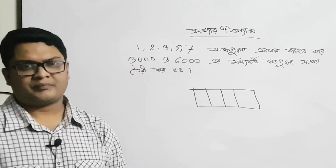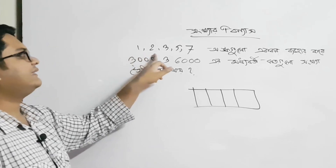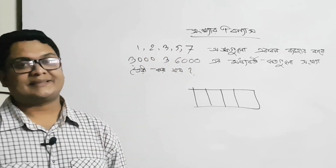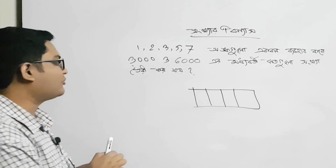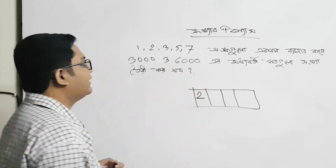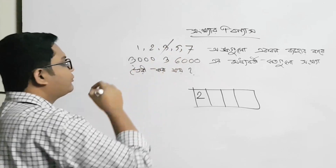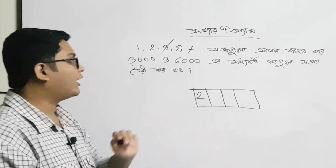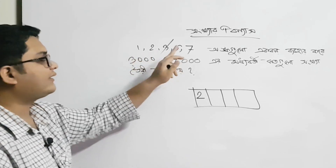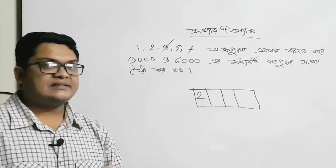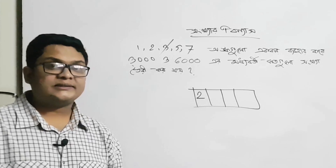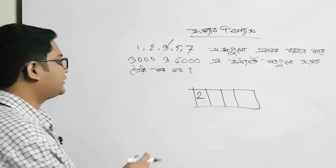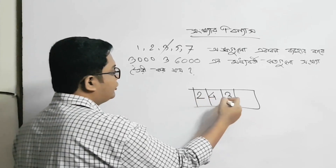পাঁচ বস্তে পারবে, কারণ এ ছাড়া বাকি যাকি বসাই সেটা হয় তিন থেকে কম হয়ে যায় অথবা ছয় থেকে বেশি হয়ে যায়। তাহলে আমার প্রথম খানায় বসানো যাবে — তাই ফিলাপ করতে পারবো। যে এখানে যে কোনো একটা অপশন।